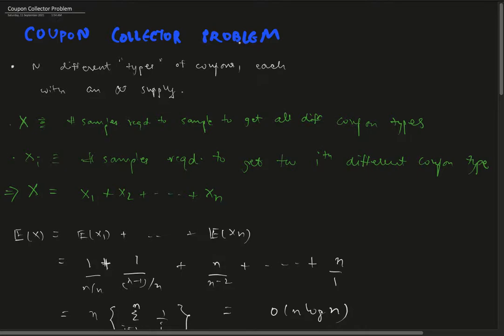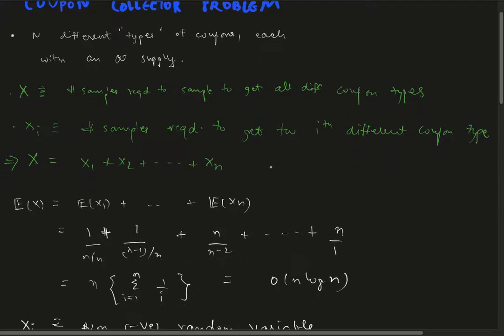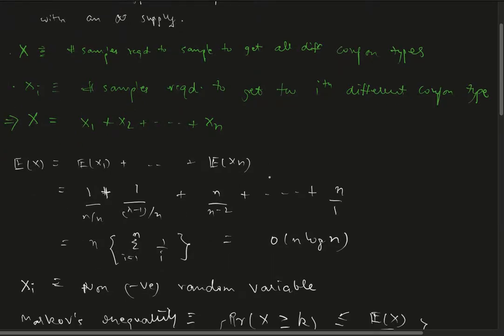If in the second trial we get a coupon other than C_1, that means we have successfully gotten the second different type of coupon. By common sense we can see that X is equal to the summation of X_1 plus X_2 plus ... plus X_n.